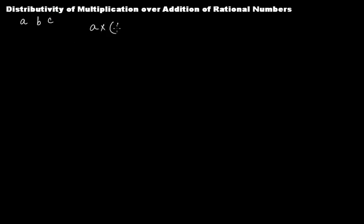Distributivity of multiplication over addition of rational numbers. Don't get scared by this long heading — it's very simple. It says that if you have three rational numbers a, b, and c, then a times (b plus c) is equal to a times b plus a times c.